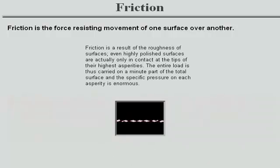When unlubricated surfaces move, the asperities deform elastically or plastically and can weld together if load and speed conditions are sufficiently severe. The harder the surfaces are forced together, the greater the friction and wear.